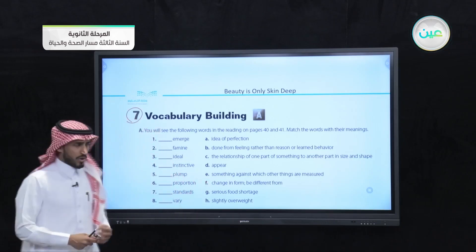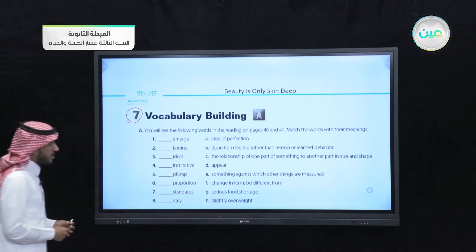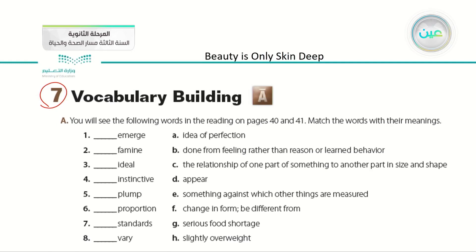These words are: emerge, famine, ideal, instinctive, plump, proportion, standards, and vary. We talked about the meaning of each one of them.